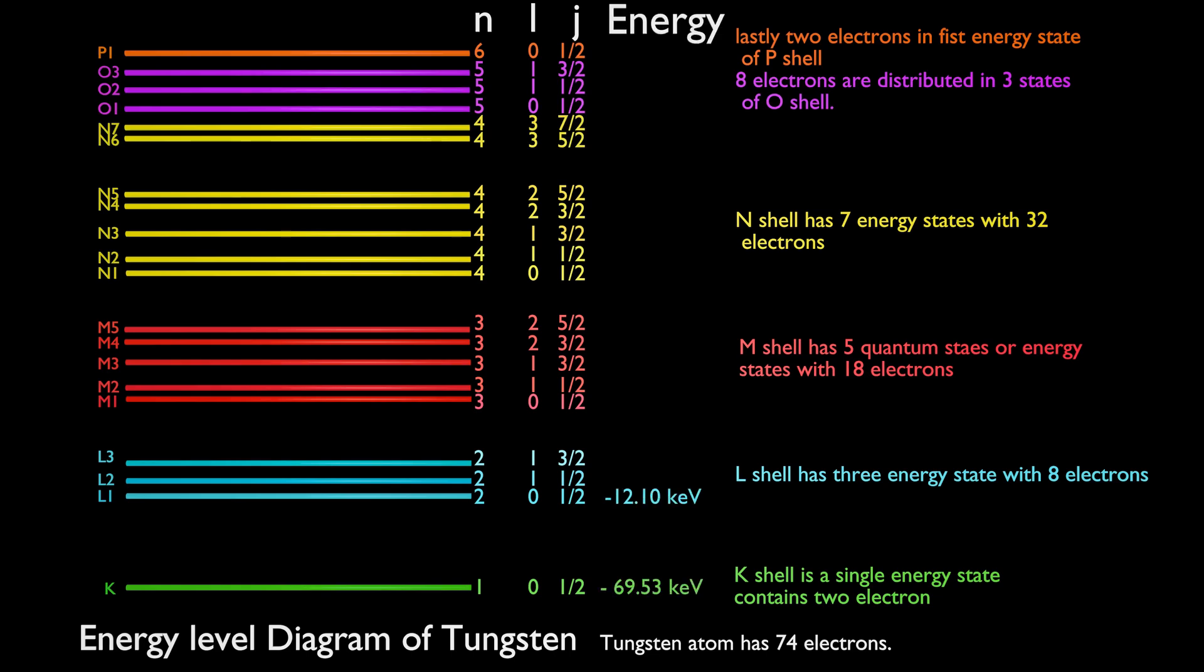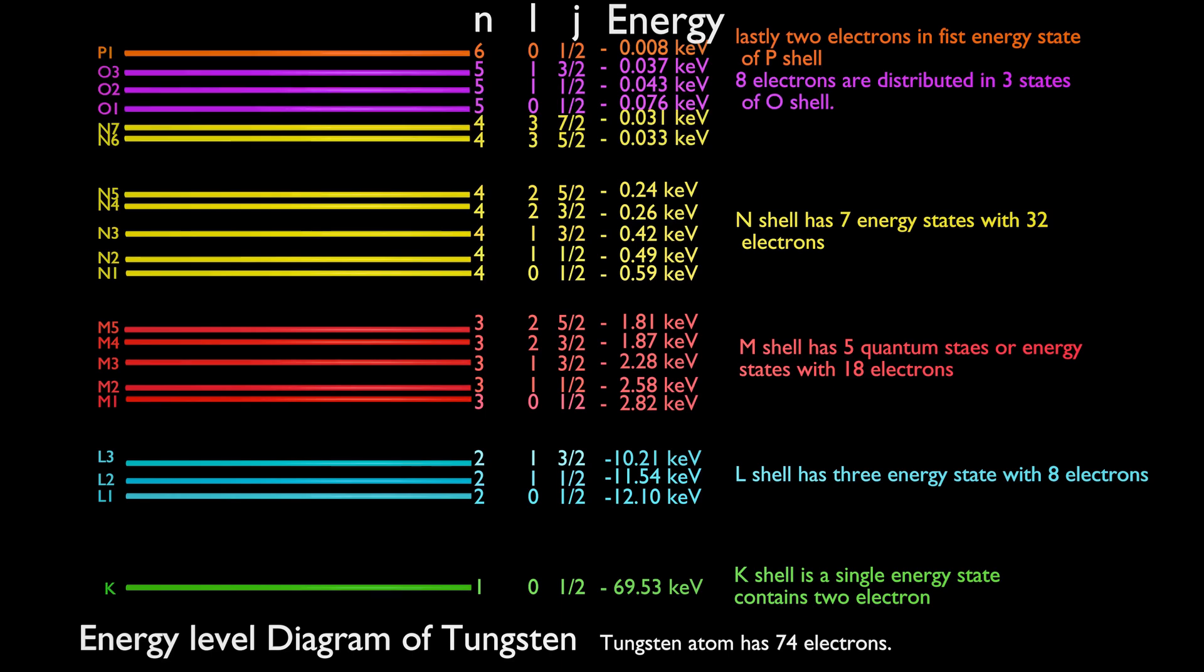Energy of electrons in K shell is minus 69.53 kilo electron volts. That means minimum energy required to remove an electron from the K shell is 69.53 keV. If high-speed electron from cathode side has kinetic energy equal or more than 69.53 keV, then only it can knock out orbital electron from K shell.